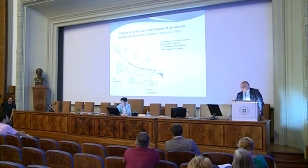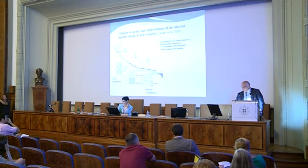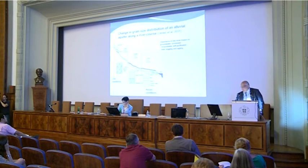The change in grain-size distribution might be interesting. In a longitudinal section of one big river, the alluvial aquifer has the coarsest material in the upstream part, so therefore there is an oxic condition in the upstream part. For example, in Germany the Danube has a relatively oxic condition very often, but when you come to Romania or even to Serbia, in most of the sites you have an anoxic condition because the sediments are very fine and there is a lot of ferro-clay with ferrous iron.